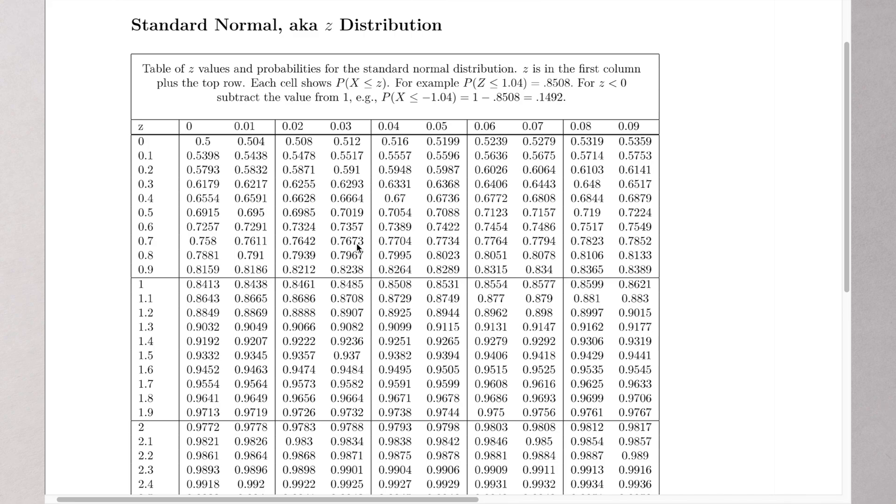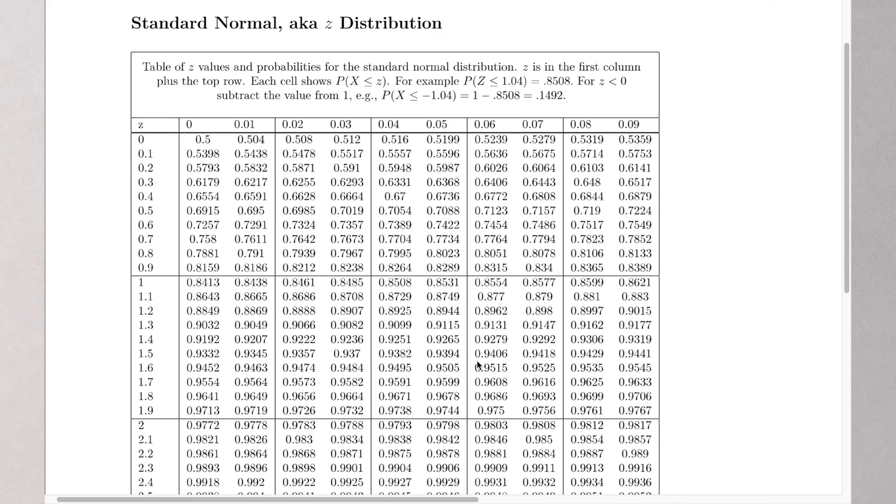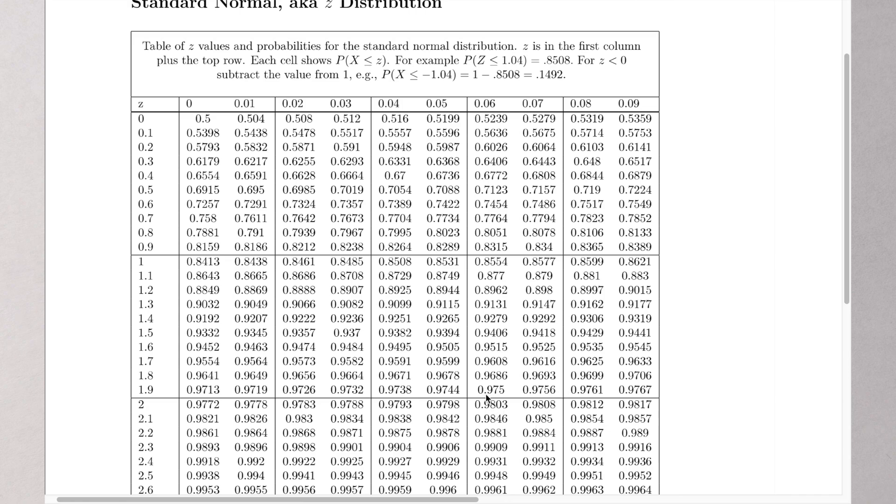So the alpha over 2, alpha would be 0.05, because it's 1 minus the confidence level. So alpha over 2 would be 0.025. Now the probability that in this table that's associated with 0.025 is 0.975, because you do 1 minus the confidence level. So the z value that is associated with that confidence level would be 1.96.